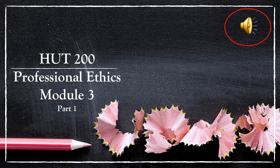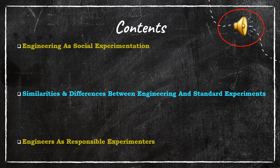Hello everyone, welcome to the third module of HUT 200 Professional Ethics. Through the previous modules we covered the basic concepts essential for a thorough understanding of professional ethics. In the first module we covered essential human values, and in the second module we covered different theories of moral development as well as some important ethical theories. In this module we will be focusing on the roles and responsibilities of engineers as responsible experimenters and how engineering experiments influence social and cultural systems of human society, and why engineering is regarded as a social experiment.